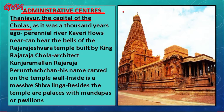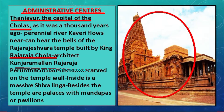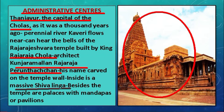In Thanjavur there was a temple named the Raja Rajeshwara temple, built by the ruler Raja Raja Chola. This temple was designed by an architect named Kunjara Mallan Raja Raja Perunthachan. Historians know this because the architect's name was carved inside the temple. Inside the temple there is a massive Shivalinga, and beside the temple are palaces with mandapas or pavilions used by kings to hold courts and carry out administrative affairs.